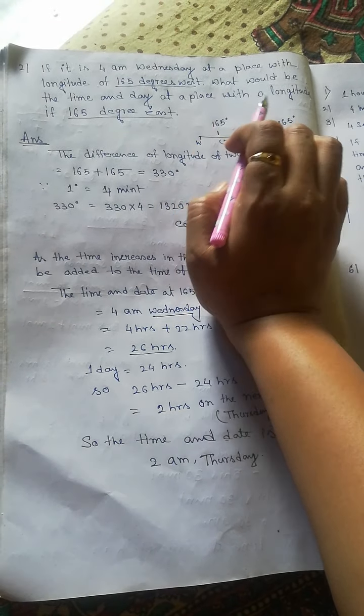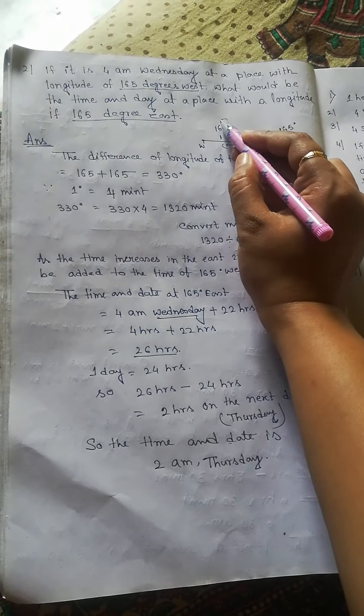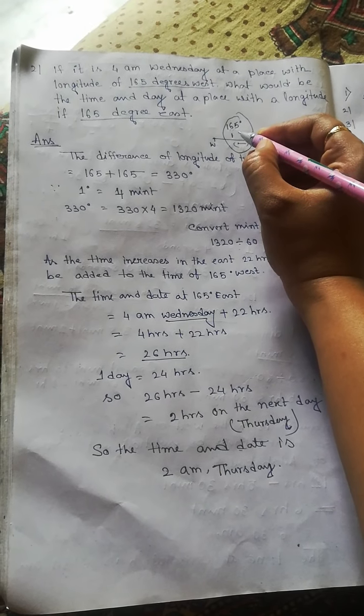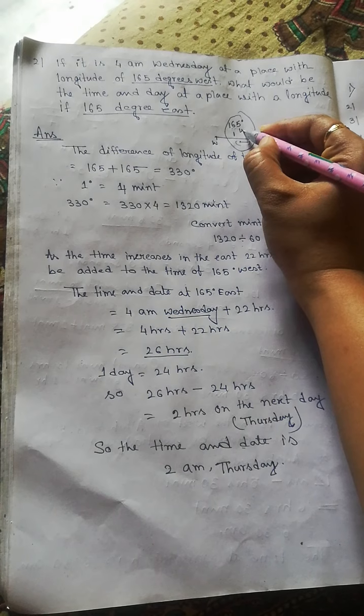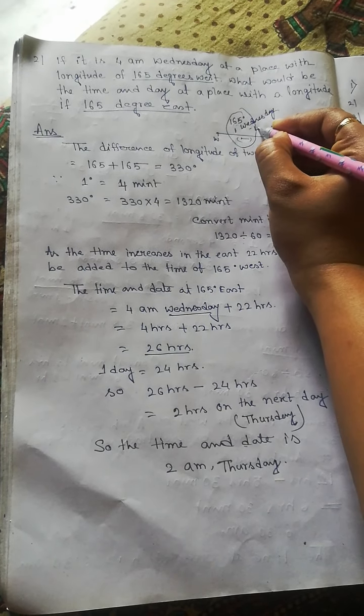...at 165 degrees East? That means you already know here the date and time: the day is Wednesday and the time is 4 AM.